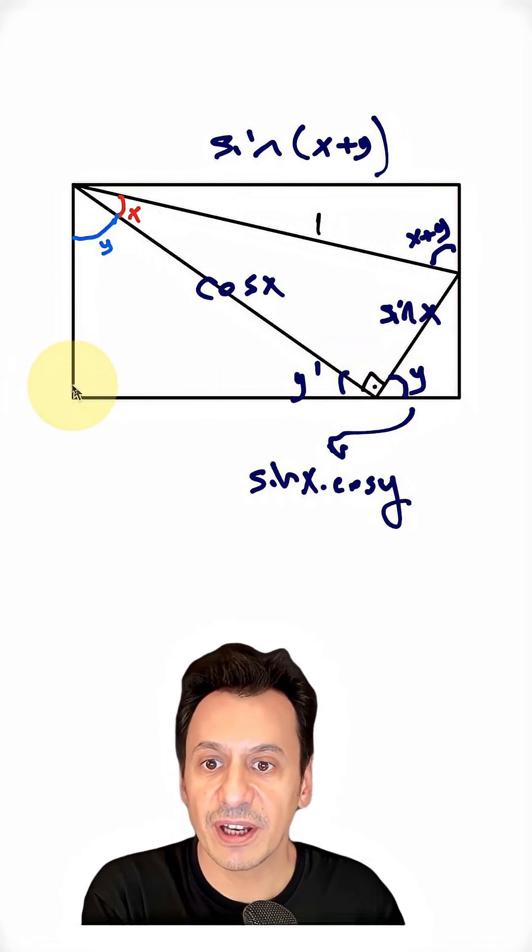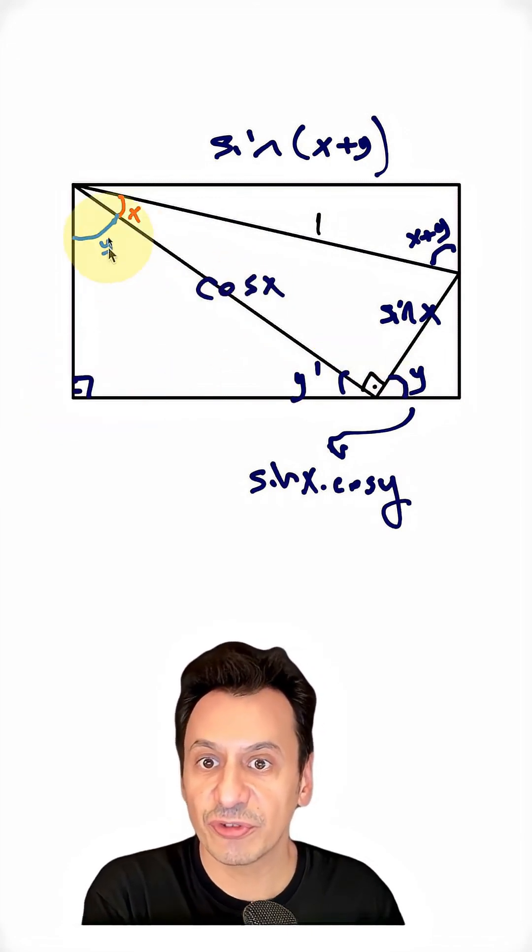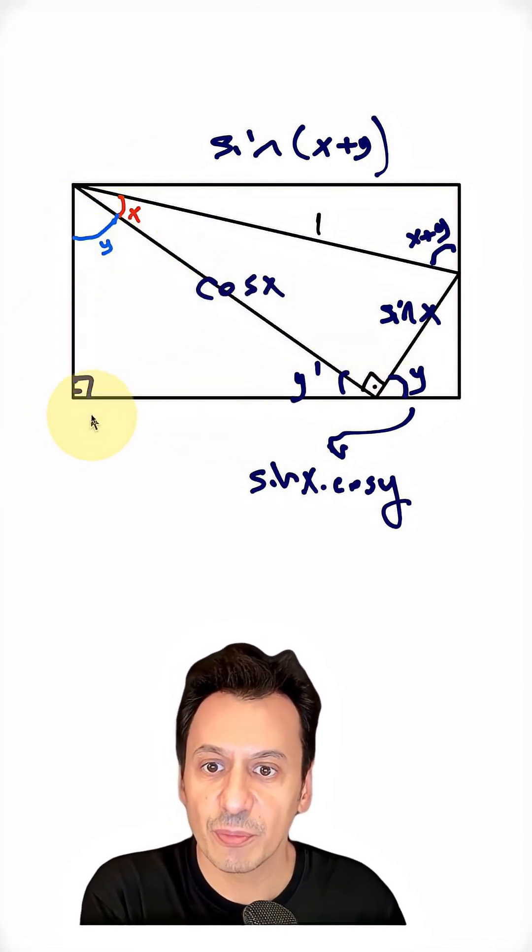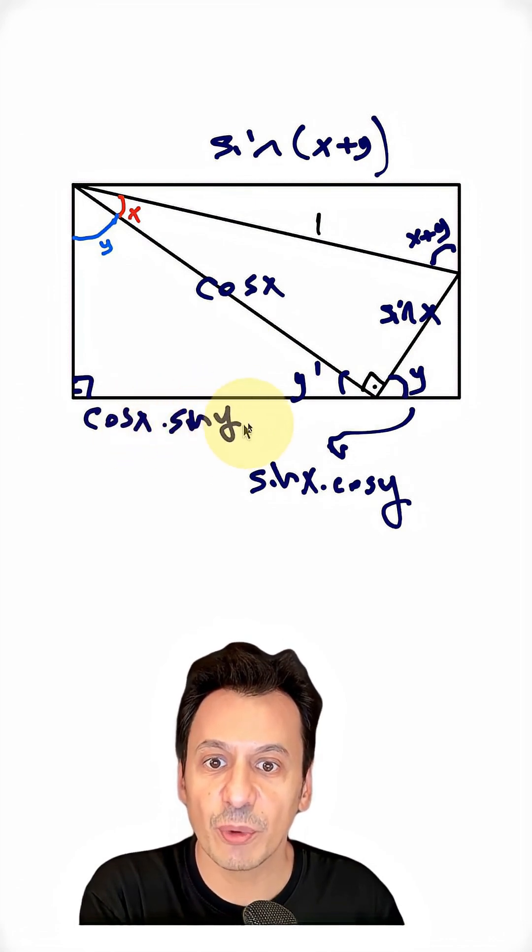When I look at the right triangle here, my hypotenuse is cosine x. And for the side opposite y, I can write cosine x times sine y.